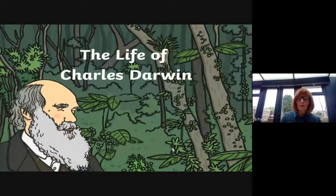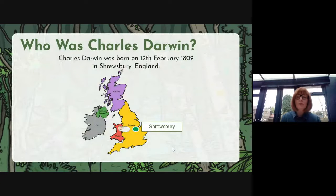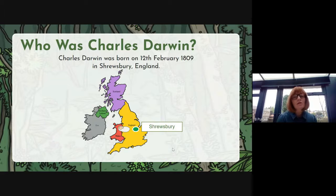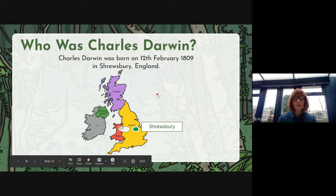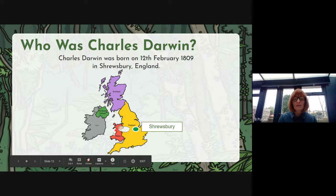So now on to our subject, the life of Charles Darwin. Who was Charles Darwin? Charles Darwin was born on the 12th of February 1809 in Shrewsbury, England. There's a map on this page — you could choose to include a map of where he was born when you're doing your writing. The yellow part of the map is England, purple Scotland, red Wales, and Ireland. And this is roughly where Shrewsbury is in England.